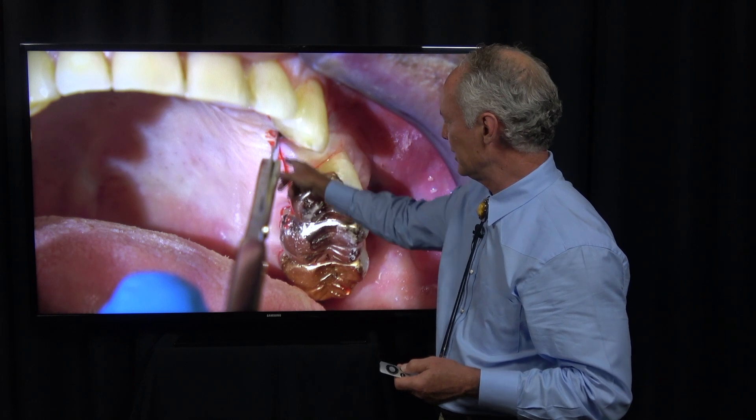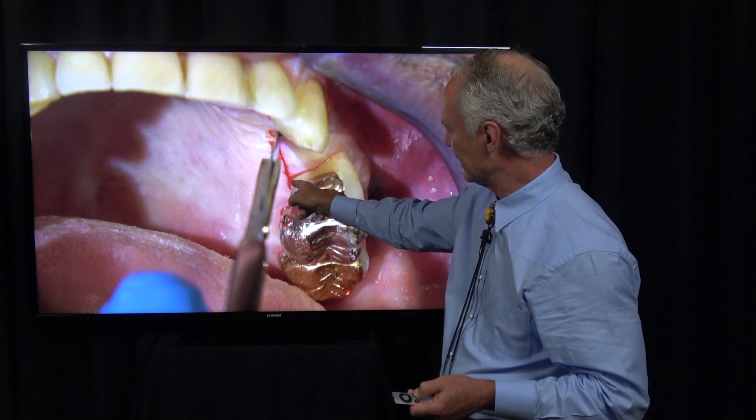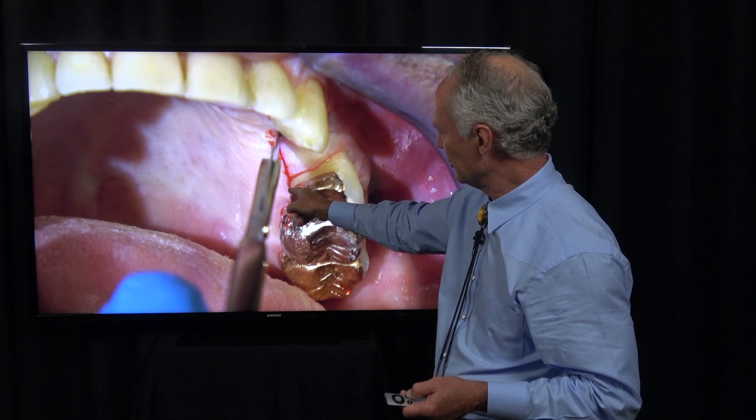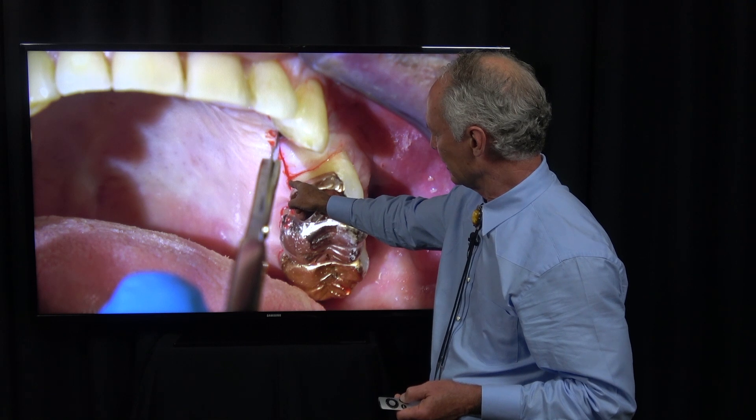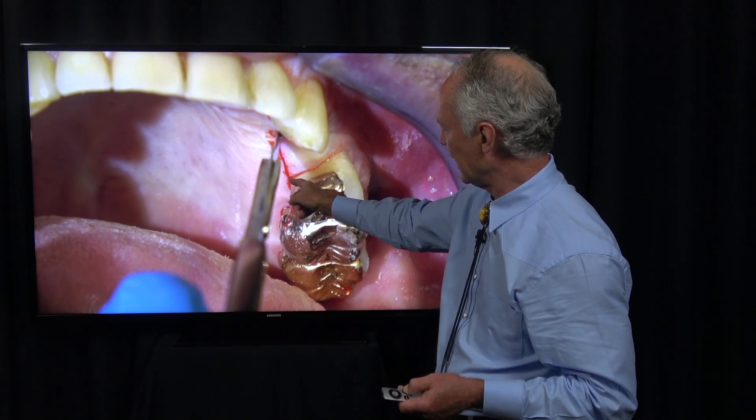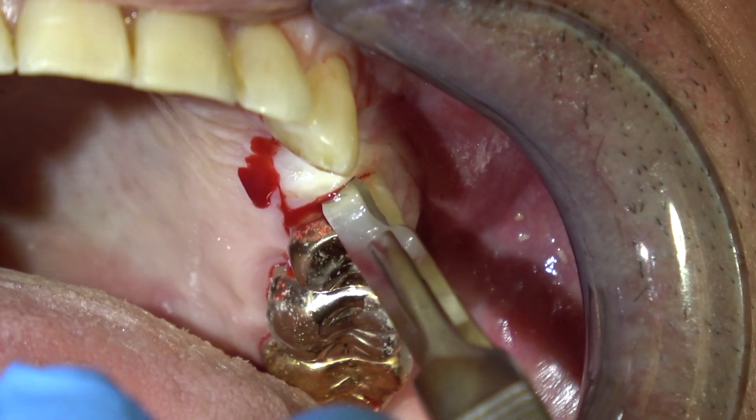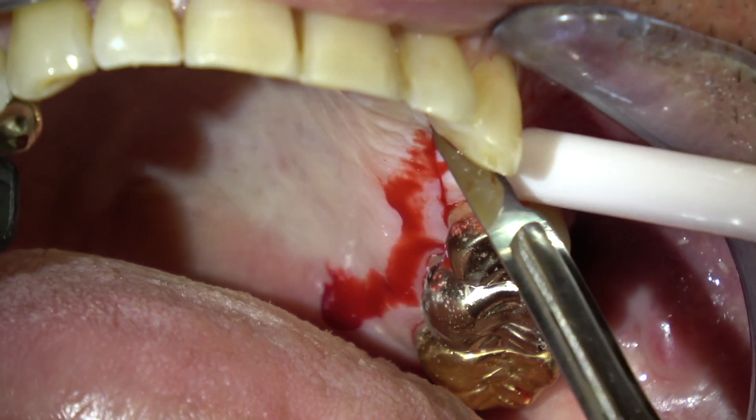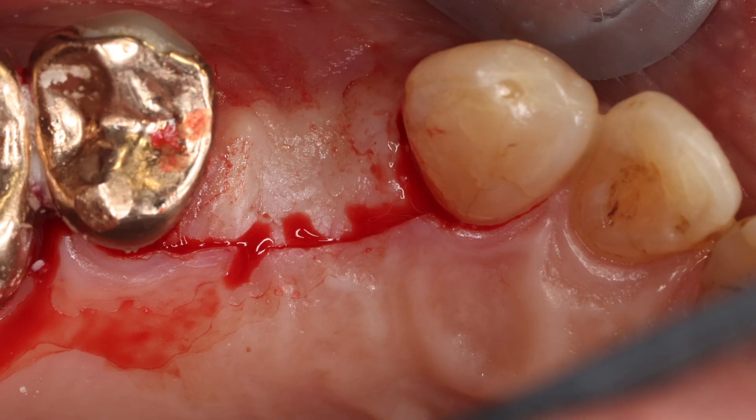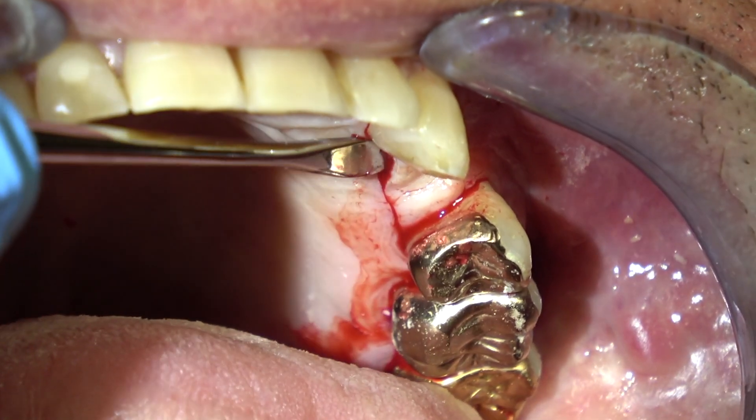Make your releasing incision on the palatal at the mesial palatal line angle. Not way out here—make it from line angle to line angle of the tooth to expose the grafted area. Then release on the mesial and distal of the flap and reflect it to the facial.